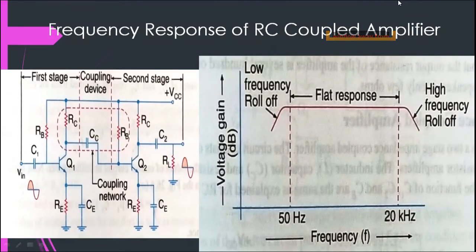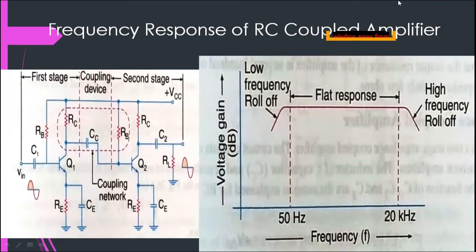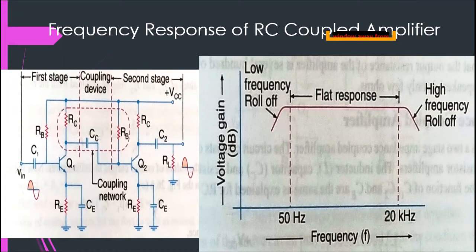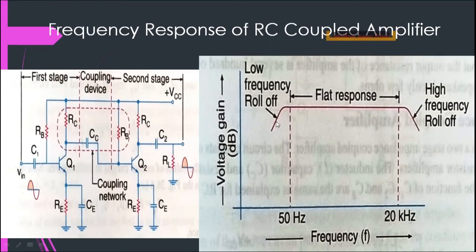Now we shall see the frequency response curve of the RC coupled amplifier. The frequency response curve of an amplifier is a graph which indicates the relationship between the voltage gain and frequency. Usually the voltage gain is expressed in decibels on the y-axis, and frequency on the x-axis. You can see that the graph drops off — it rolls off at low frequencies below 50 Hz and above 20 kHz, and remains almost constant between 50 Hz and 20 kHz. You are not going to get an appreciable gain at the low frequency range, nor at the high frequency range.